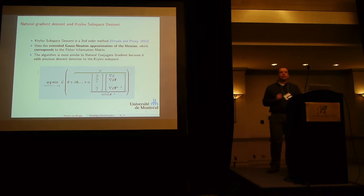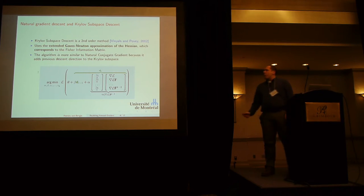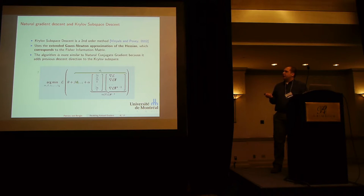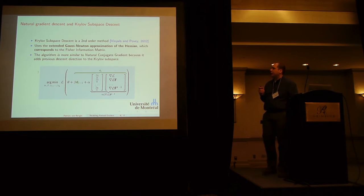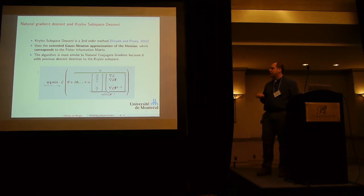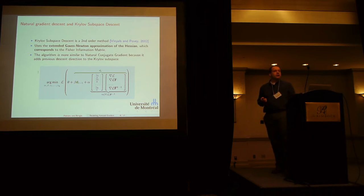Another algorithm proposed for deep learning was Krylov subspace descent. This algorithm also uses the extended Gauss-Newton approximation, so it is a natural gradient method. What's more interesting is that when constructing the quadratic surface, they add the previous descent direction to it. Rewriting the math, you get something that looks very similar to nonlinear conjugate gradient or natural conjugate gradient — the only difference is that instead of using Polak-Ribière to compute the beta factor, you actually optimize for it.